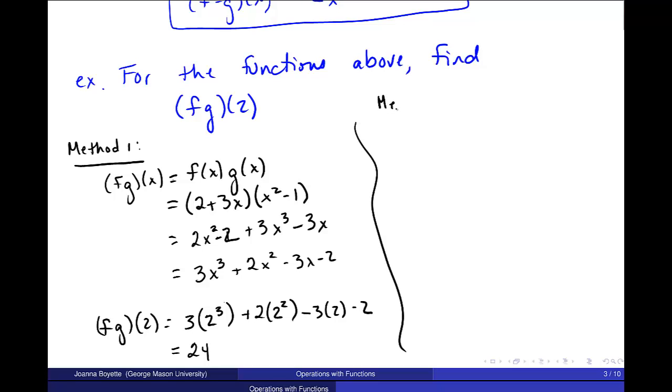The other method, method 2, is for me to find f of 2 and then g of 2. So let me find f of 2 first. That's 2 plus 3x, which is 2 plus 3 times 2, which should be 8. 3 times 2 is 6 plus 2 is 8.